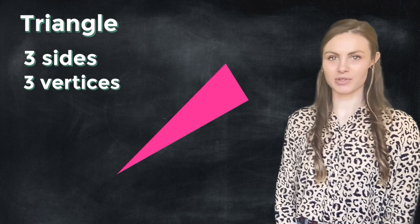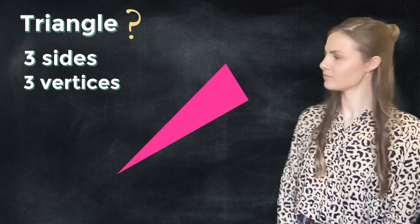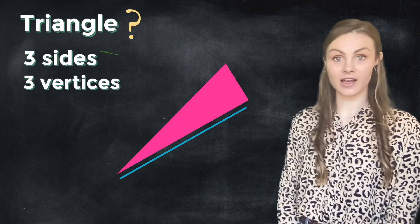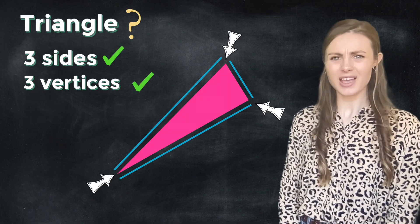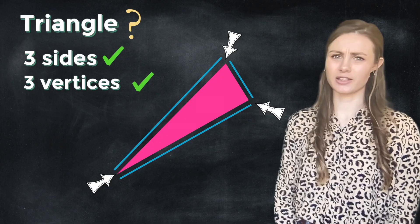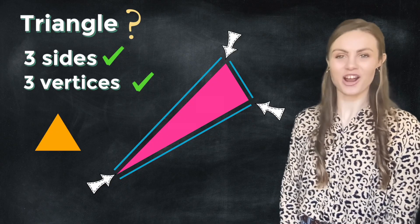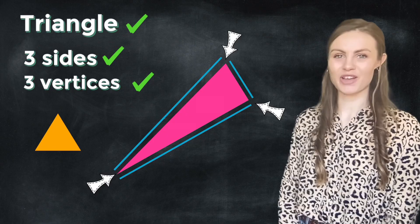Okay, what about this shape? Is it also a triangle? Well, it's got three sides and three vertices, but it looks a little bit different from the other triangle. Yes, it's still a triangle. Three sides, three vertices.